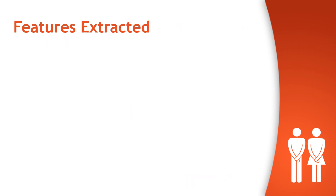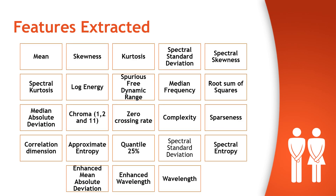After removing noise from ECG signals, the following features were extracted in the frequency domain: mean, skewness, kurtosis, median frequency, root sum of squares, complexity, zero crossing rate, chroma, median absolute deviation, correlation dimension, spectral standard deviation, spectral entropy, wavelength, enhanced mean absolute deviation, log energy, spurious free dynamic range, spectral skewness, approximate entropy, and some others.